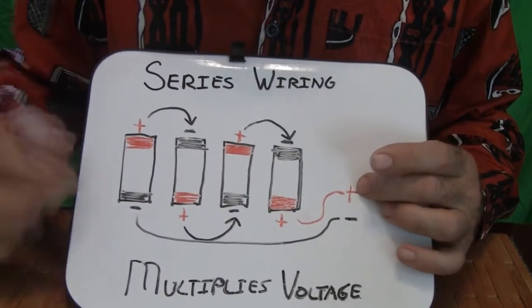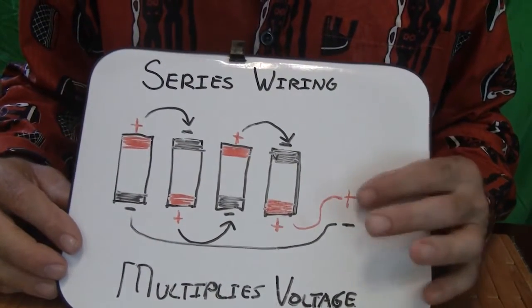And the positive comes out. And here is the negative terminal of the battery over here. Positive and negative.